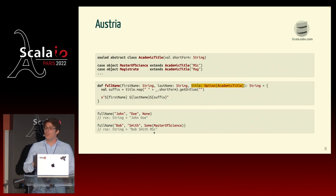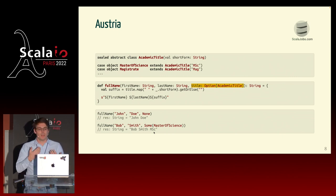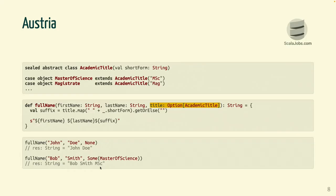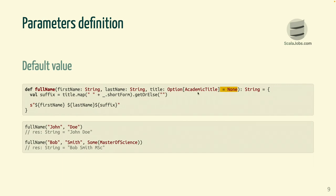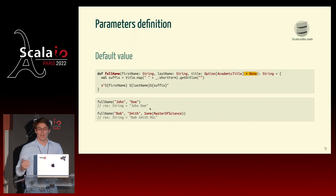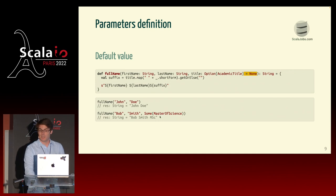Now the thing is, we know that most people either don't have an academic title or they don't want to use it. So it makes sense to use a default value. We add equals none after the definition of title, meaning that if you don't supply it, the compiler will inject this value. You can call full name with John Doe without specifying the title and the compiler will inject none. But you can still specify it if you want.